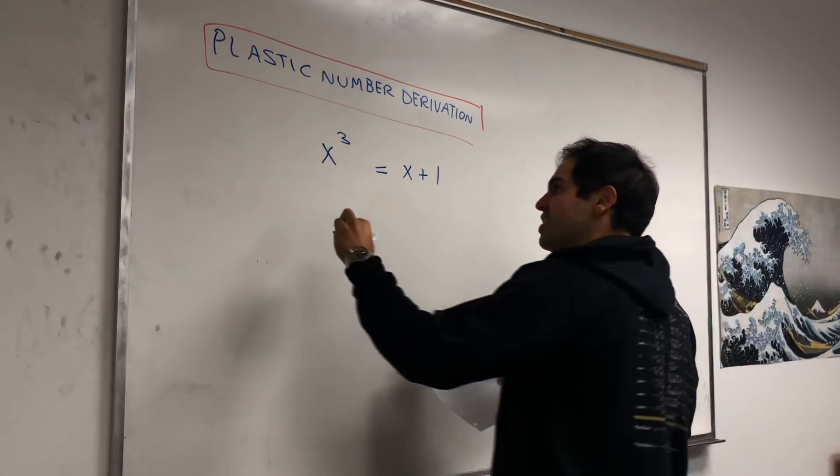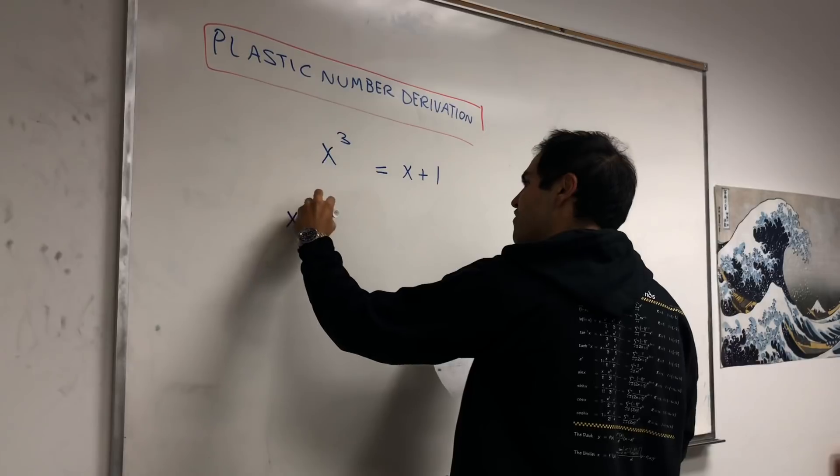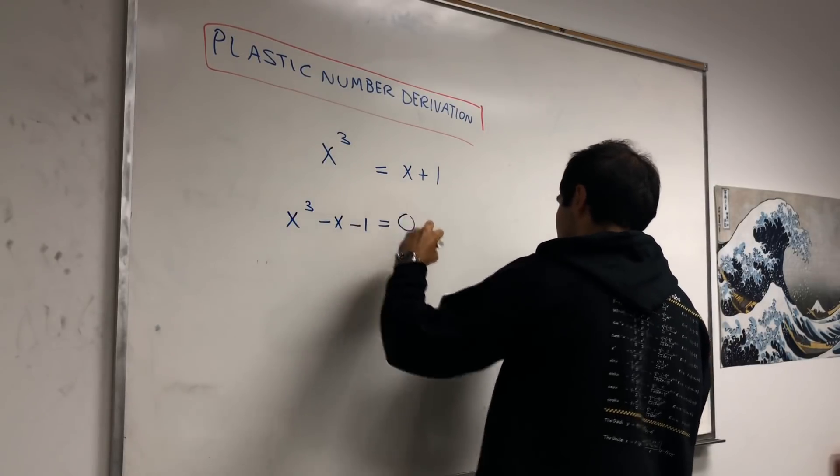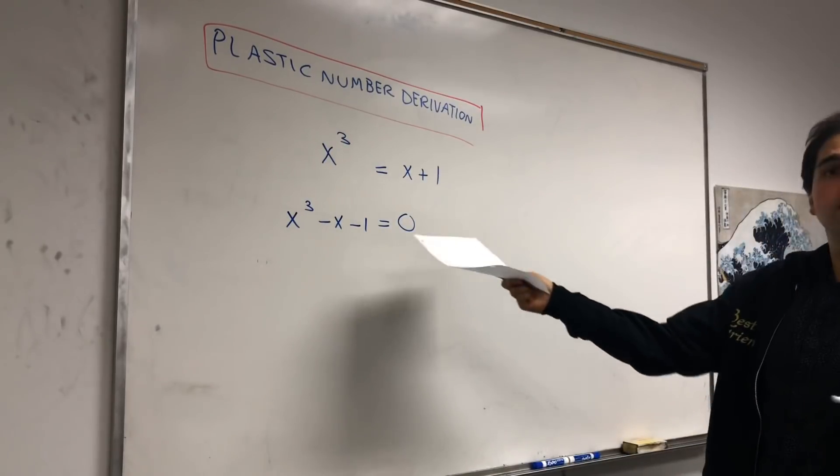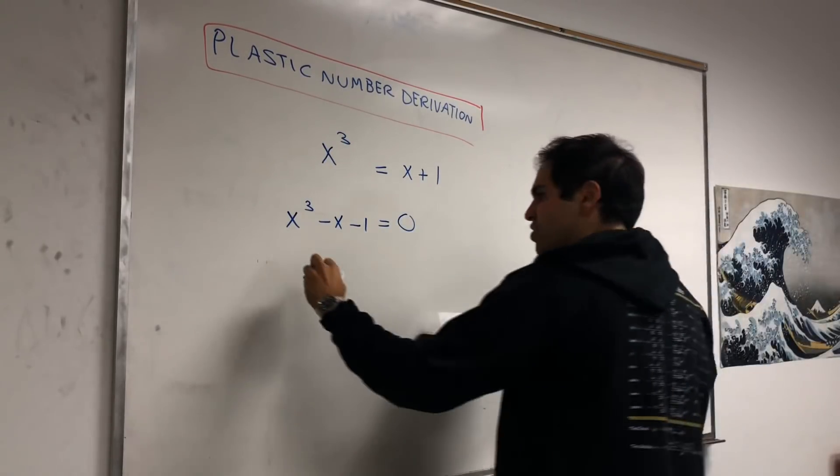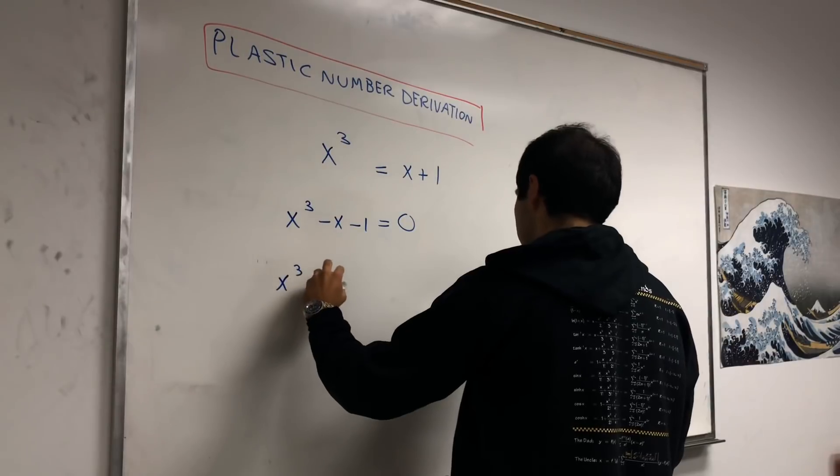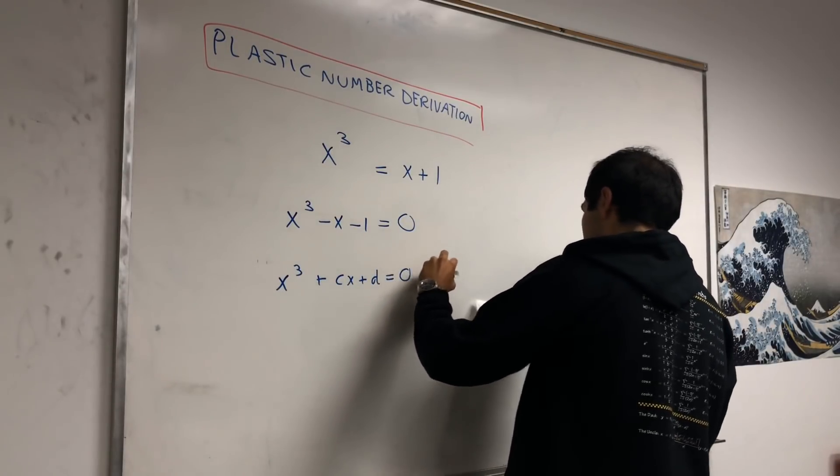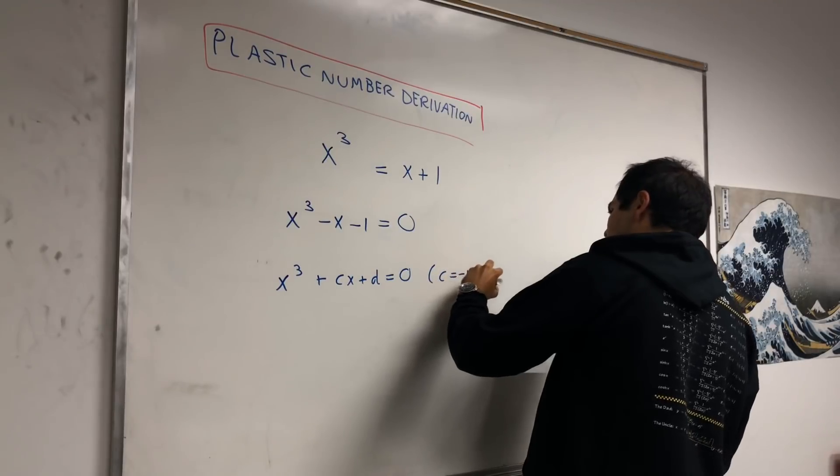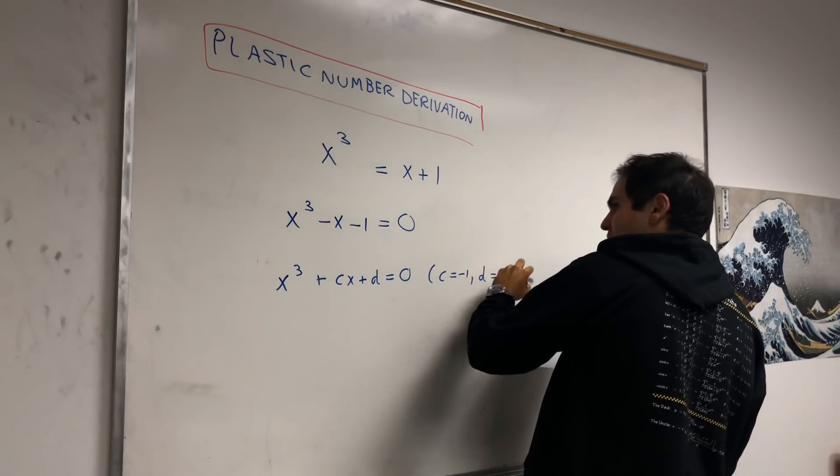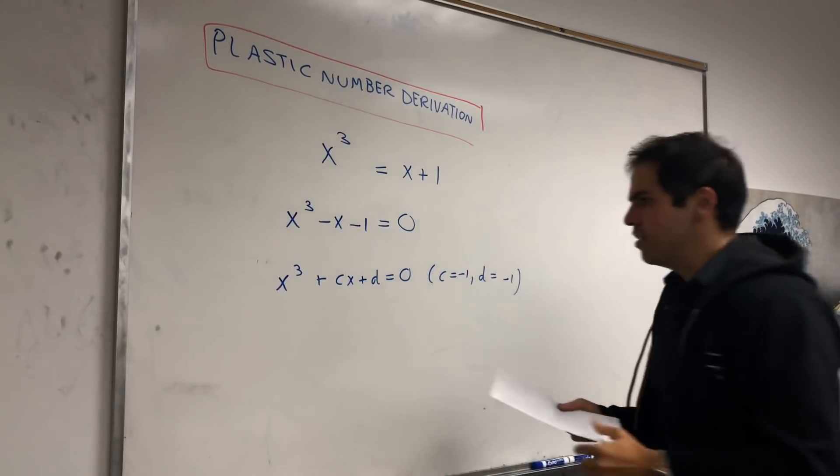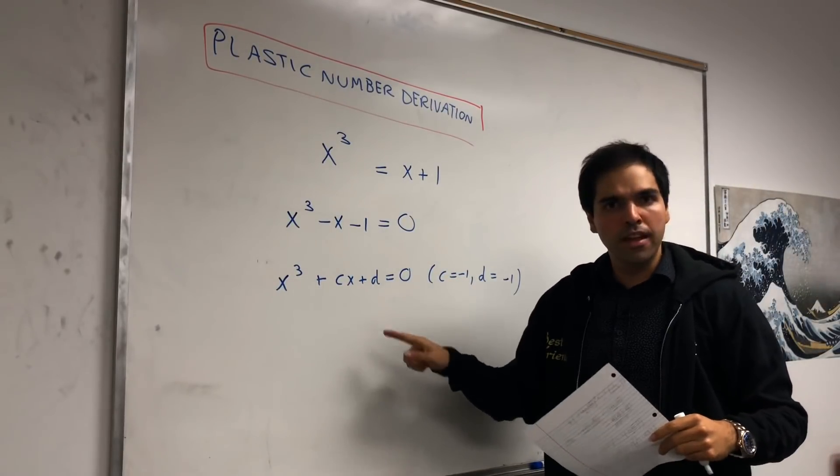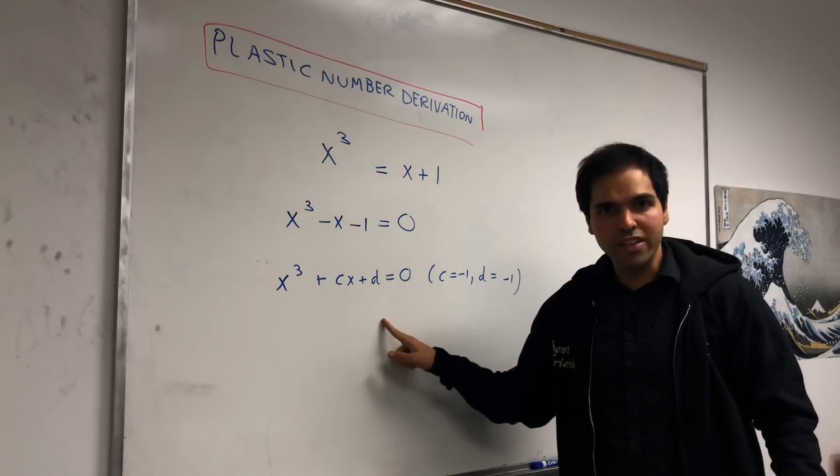Okay, so how do we do this? First of all, let's put everything on the left-hand side. So x cubed minus x minus 1 equals 0. And this is of the form x cubed plus cx plus d equals 0, where c is minus 1 and d is also minus 1.